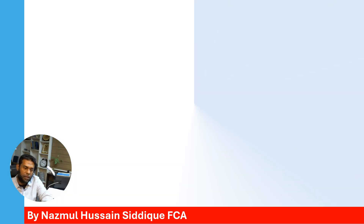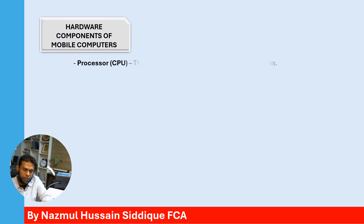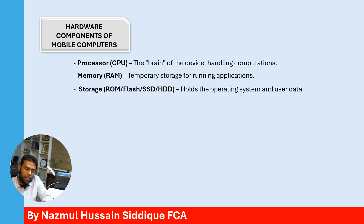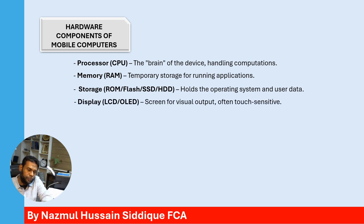The hardware components of mobile computers. Processor or CPU — the brain of the device, handling computations. Memory or RAM — temporary storage for running applications. Storage like ROM, flash, SSD, HDD — holds the operating system and user data. Display — usually LCD or OLED, a screen for visual output and touch screen input.